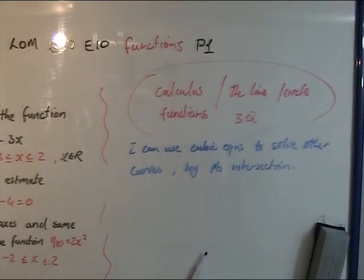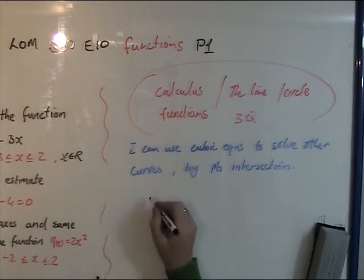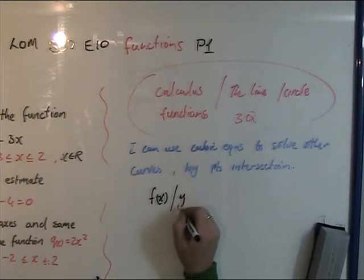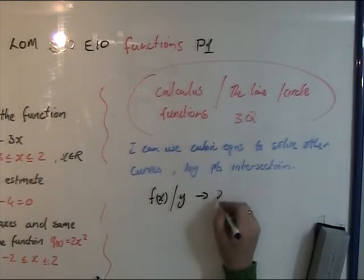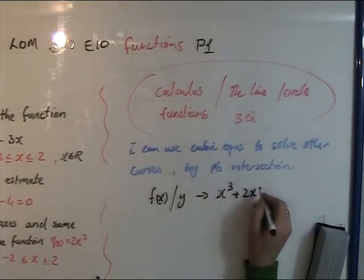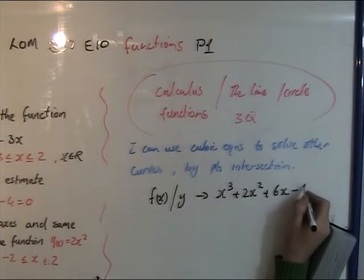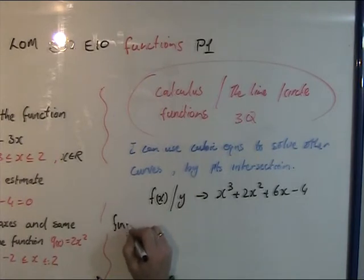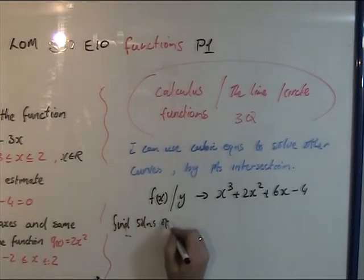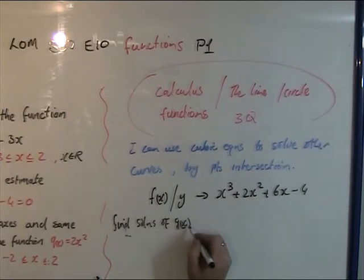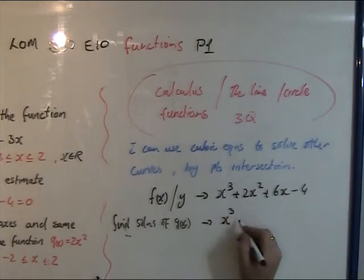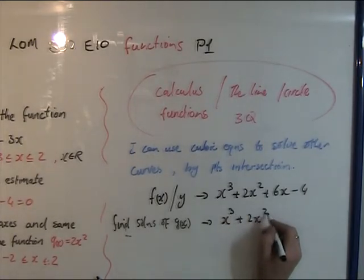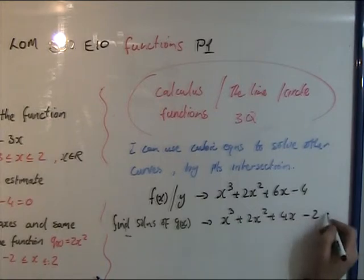For example, f of x, which is the same as y, goes to x cubed plus 2x squared plus 6x minus 4. Now it says find the solutions of g of x. And g of x — the curve — is actually another quadratic: plus 4x minus 2x plus 4x minus 2x equals to 0.